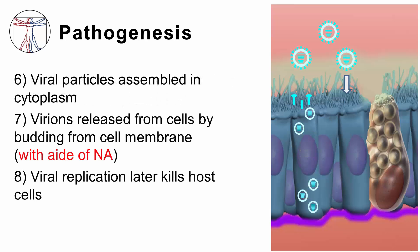Progeny RNA genomes are transported to the cytoplasm, where newly synthesized proteins act to assemble virions. Progeny virions are released from the cell by budding off the outer cell membrane at the site where the hemagglutinin and neuraminidase are located. Recall that neuraminidase acts to release the virus by cleaving sialic acid on the cell surface at the site of the budding progeny. Thereafter, new viruses are free to infect neighboring epithelial cells.